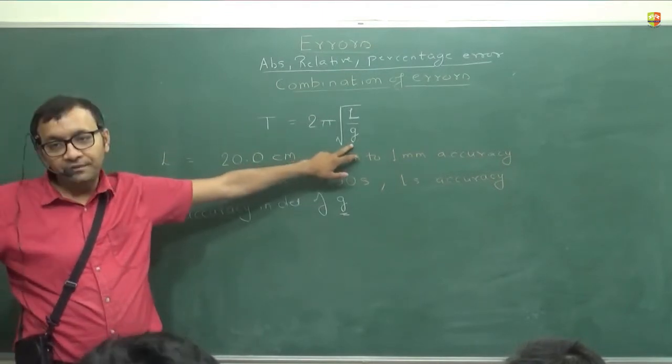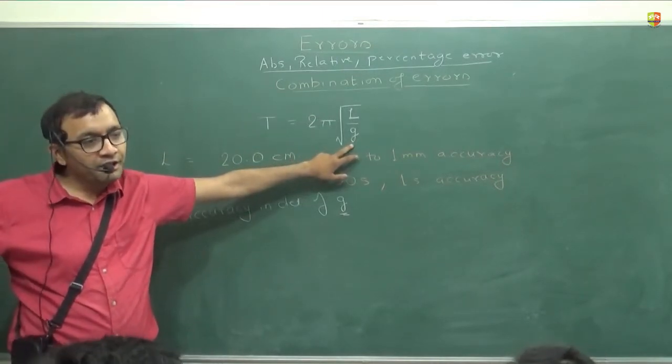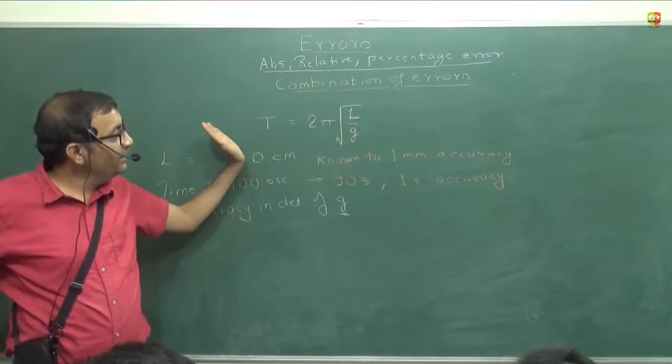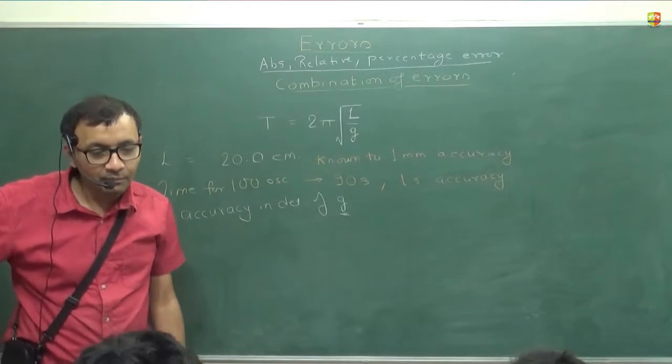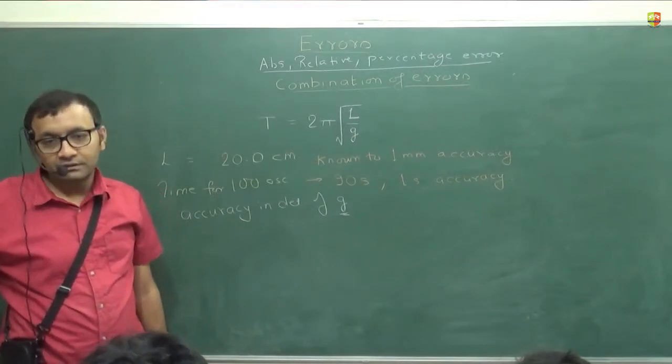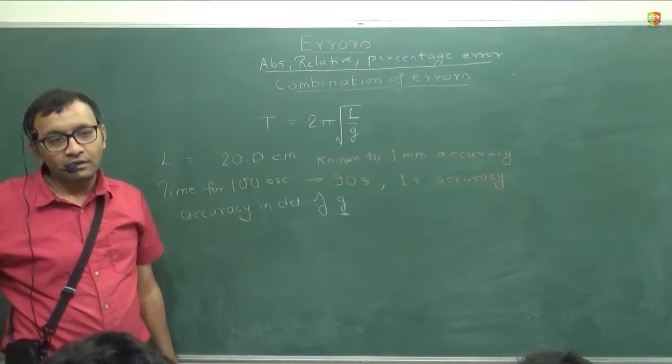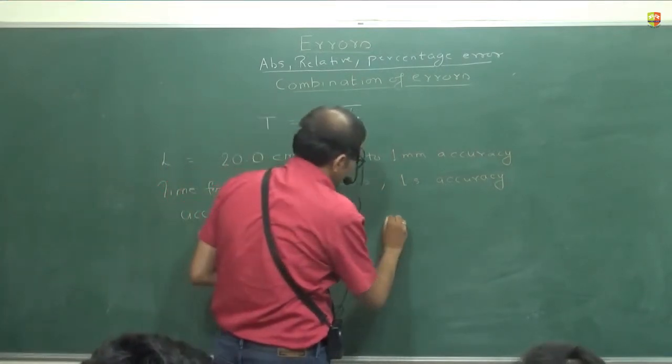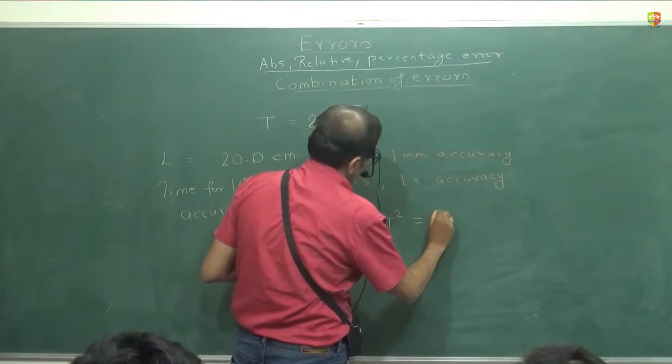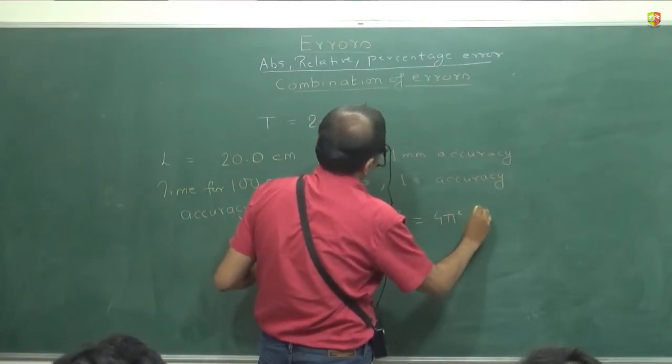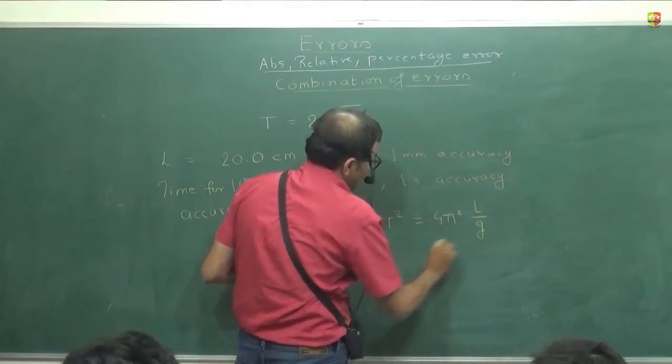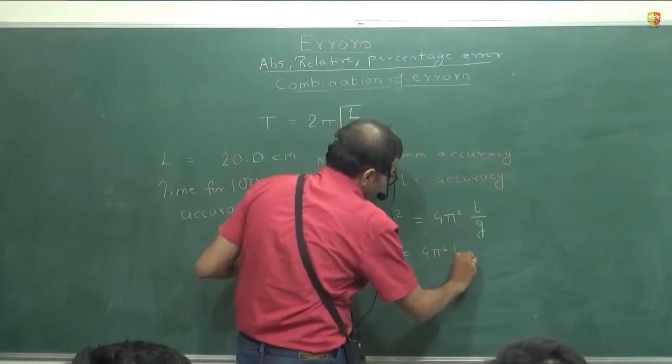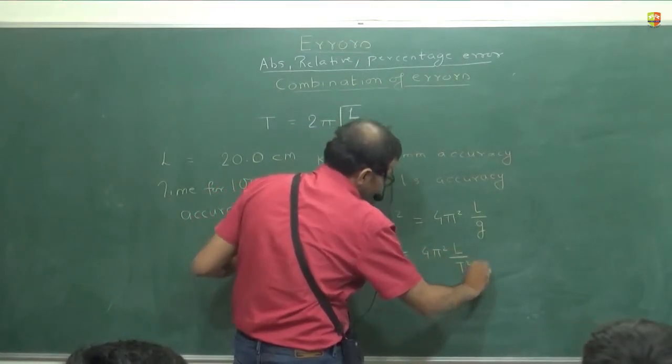First of all, you need to write it in a form of y is equal to function of whatever the measured quantity. For what you are calculating the error? Creating error for the g. What are the quantities you are measuring? t and l. So bring g this side and t and l on the right hand side. Modify the expression.